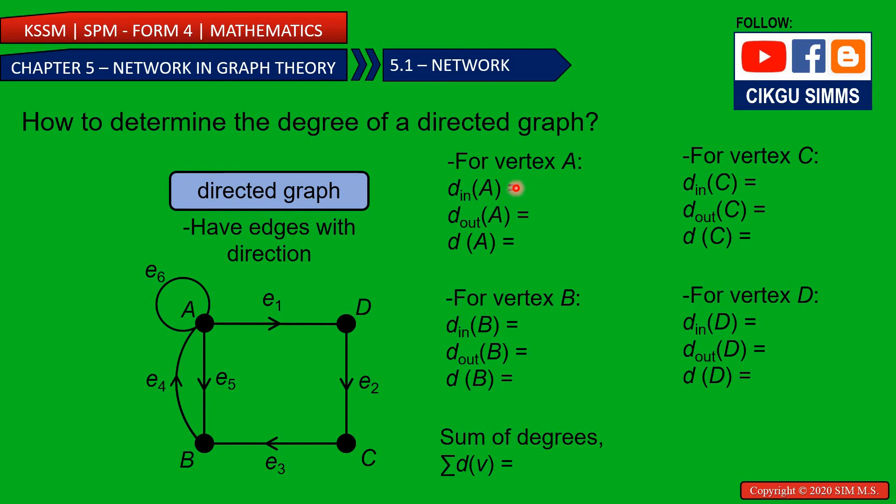So for degree out, this one is out, this one also out and then for loop, one is out. So one, two, three. So degree out is three. So for degree A is degree in plus degree out, which means it's two plus three, the answer is five. If you count it's one, two, three, four, five. The degree is five.